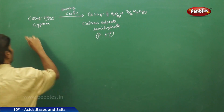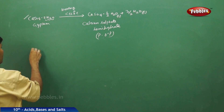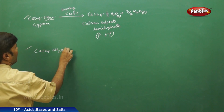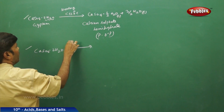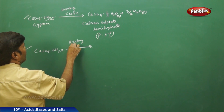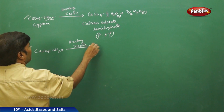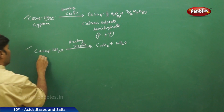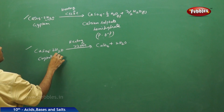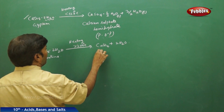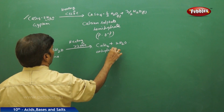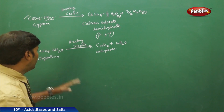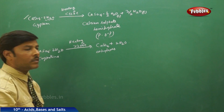On the other hand, if calcium sulphate dihydrate (CaSO₄·2H₂O) is heated to a temperature greater than 200°C, you get anhydrous calcium sulphate (CaSO₄) plus 2H₂O. The removal of all water molecules from the salt converts it from crystalline salt to anhydrous salt.